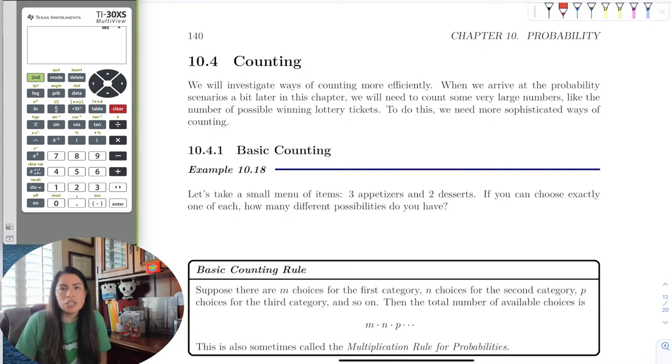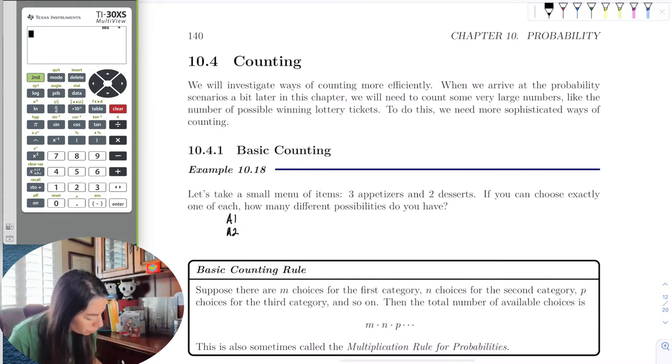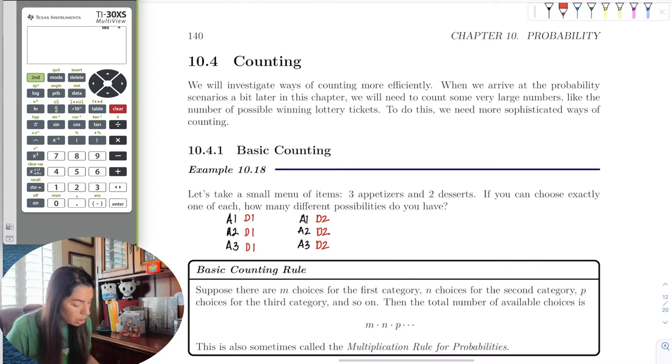So let's start with an easy thing. You go into a restaurant with a fixed menu. They have a small menu of three appetizers and two desserts. If you can choose exactly one of each, how many different possibilities do you have? Okay, so I have three appetizers: appetizer one, appetizer two, and appetizer three. And that means I could pick dessert one for each of these, or I could pick it with dessert two.